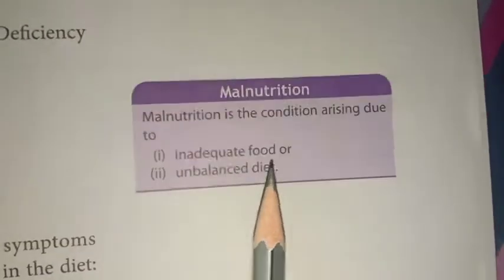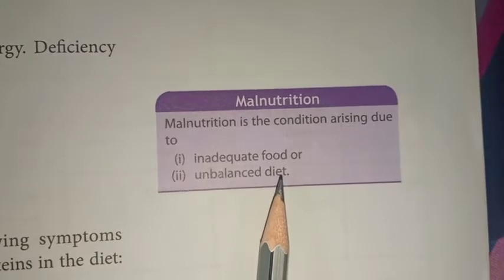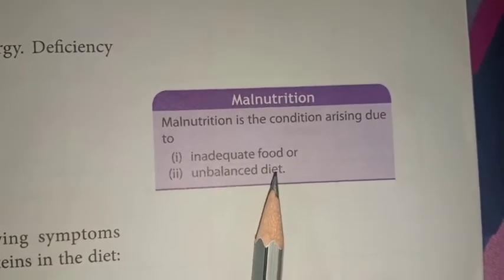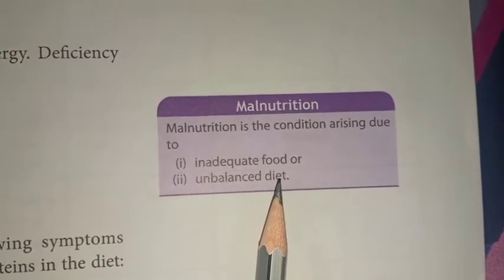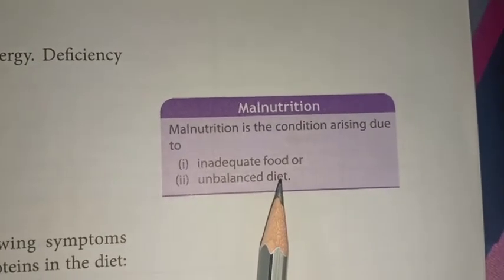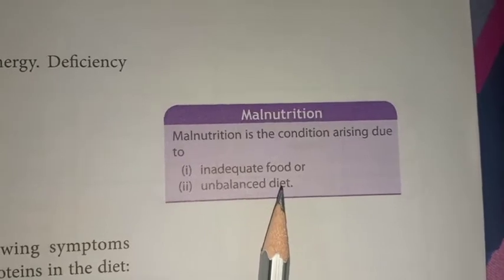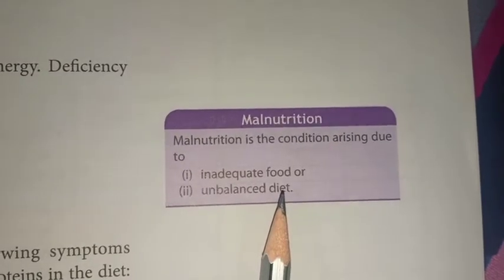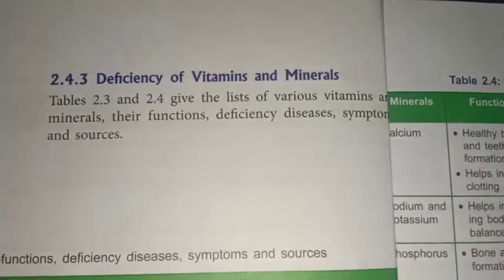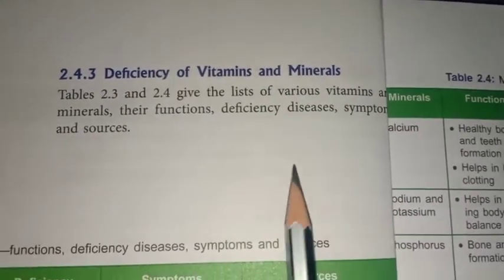This is also an important fact about malnutrition. Malnutrition is a condition arising due to inadequate or improper food and an unbalanced diet. If you have a deficiency of any food component, that is called malnutrition. At last, we have the deficiency of vitamins and minerals, for which we have a chart.